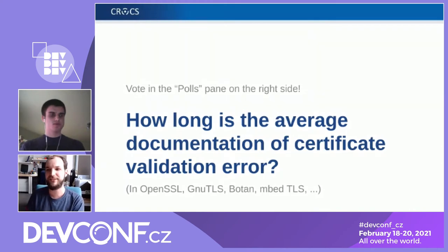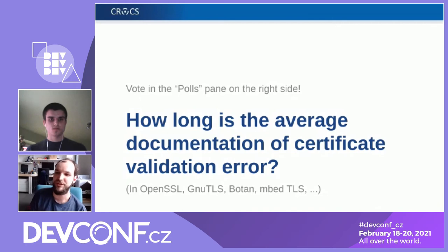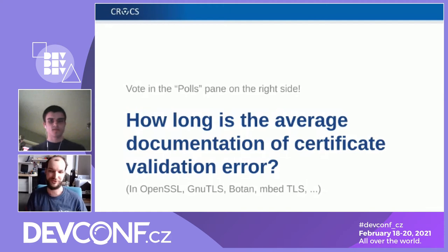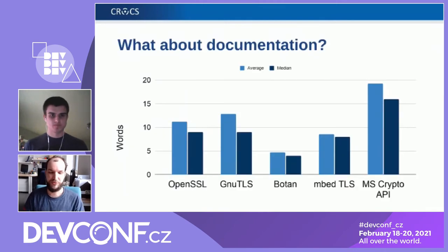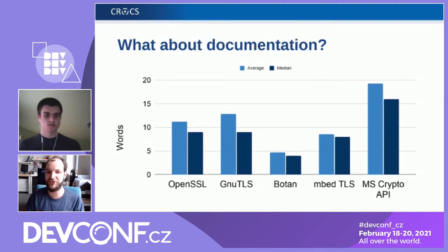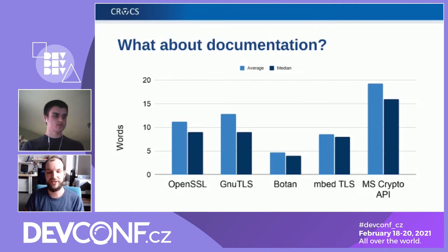The majority of you think it's between five and ten words, though some think it's five words or less, and others think 25 or less. The reality is that it differs between libraries, but roughly we can say it's 10 words or less. The only positive exception is the Microsoft Crypto API, whose average documentation is an astounding 16 words, with the lighter blue being the average and darker blue being the median. The median is slightly lower, which means certain errors have much longer documentation because they are probably much more complicated.